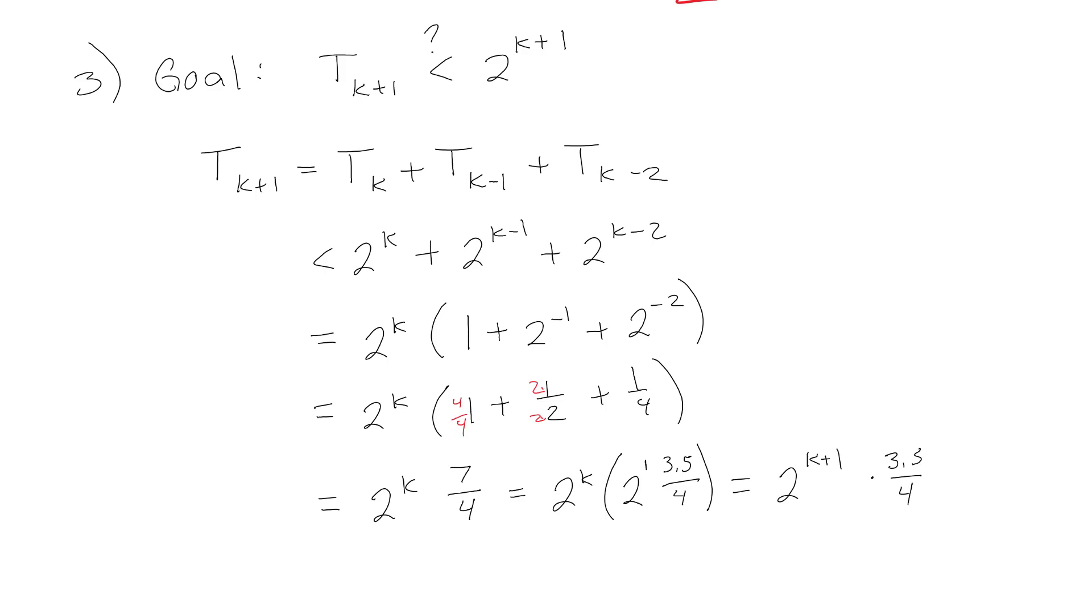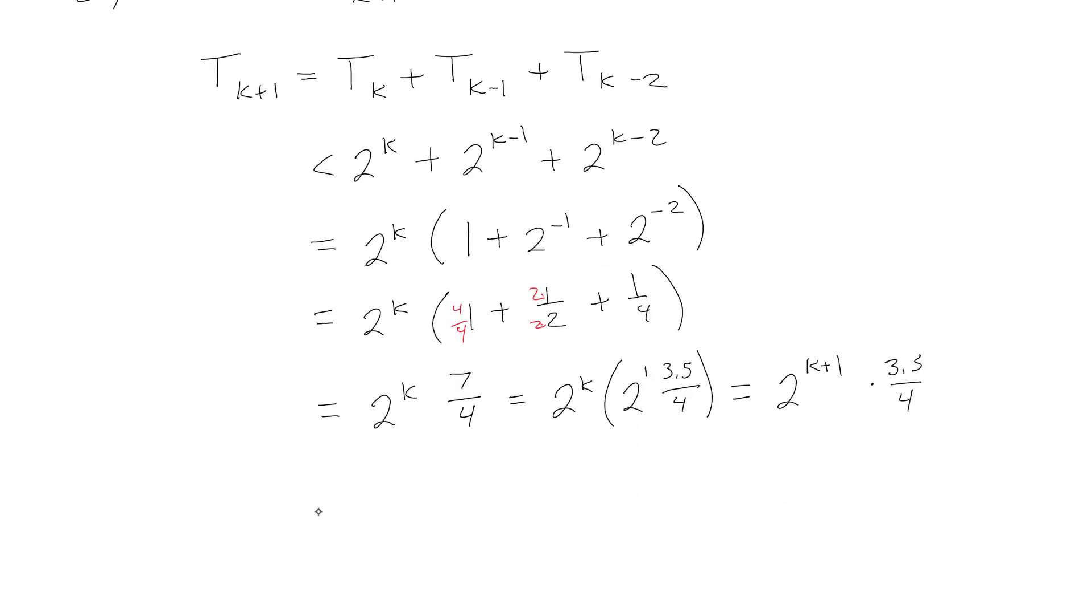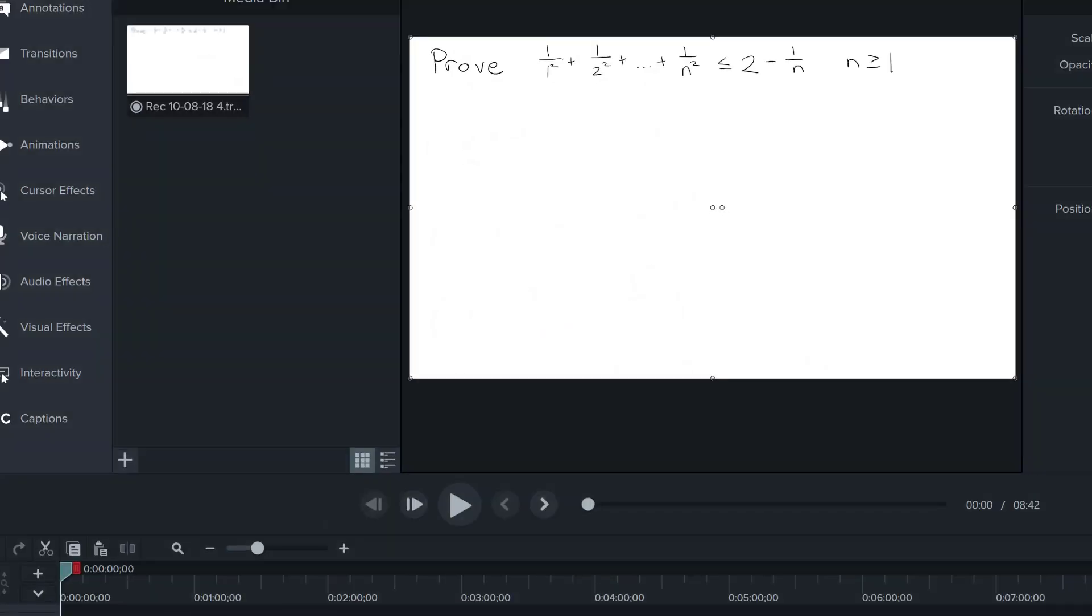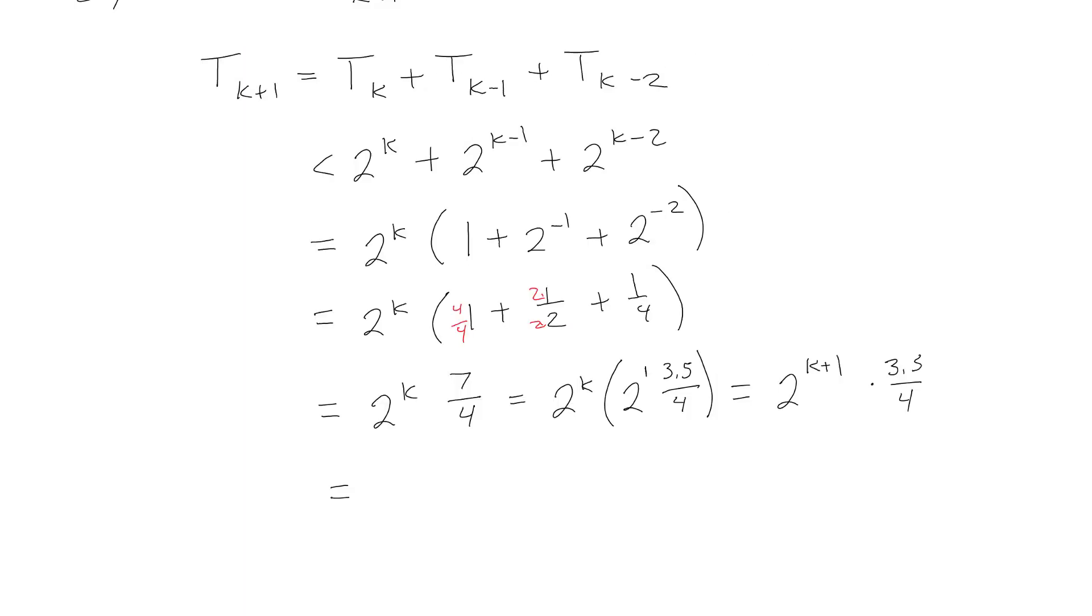Yeah, so that's fun. Other people would call that 7 eighths. So if it helps you to write it as 7 eighths, I would recommend doing that. So 2K plus 1 times 7 eighths.